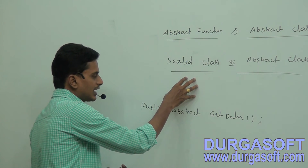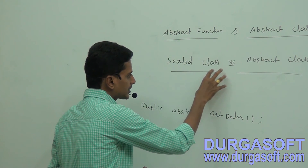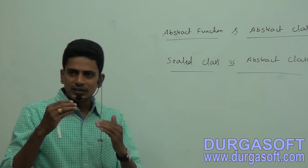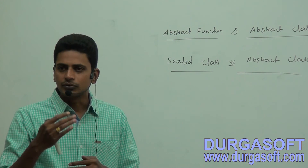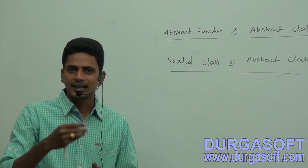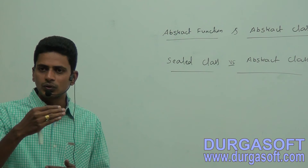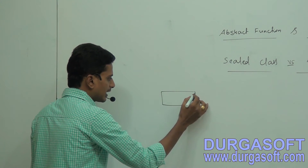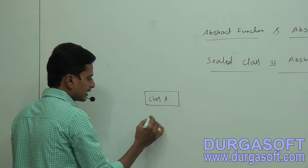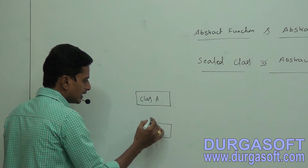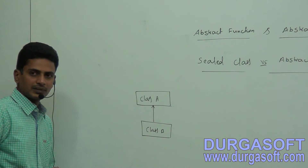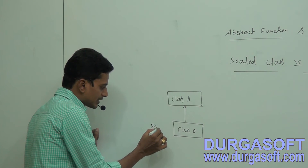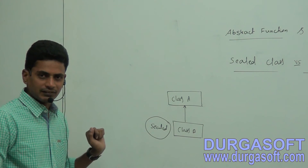Now let me discuss sealed class, and later I'll talk about sealed class versus abstract class. A sealed class is a class from which it is not possible to create or derive a new class. For example, if class B is inherited from class A, and we make class B as sealed using the 'sealed' keyword, then no further class can be derived from class B.